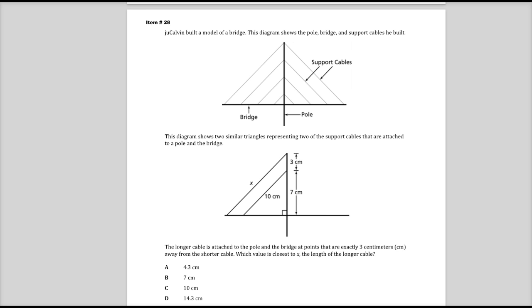Ducalvin built a model of a bridge. This diagram shows the pole bridge and support cables that he built. So they have this picture in there just to show you how the overall setup is and how the bridge is set up. The diagram shows two similar triangles representing two of the support cables that are attached to the pole and the bridge. This is the figure that actually matters. You can tell because it has numbers on it.